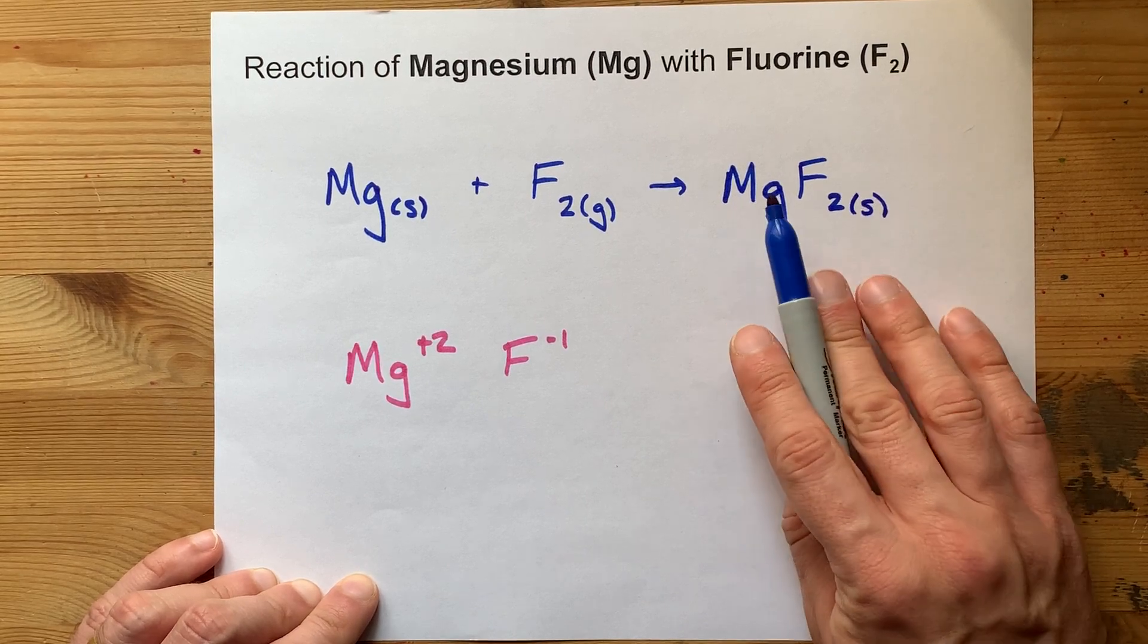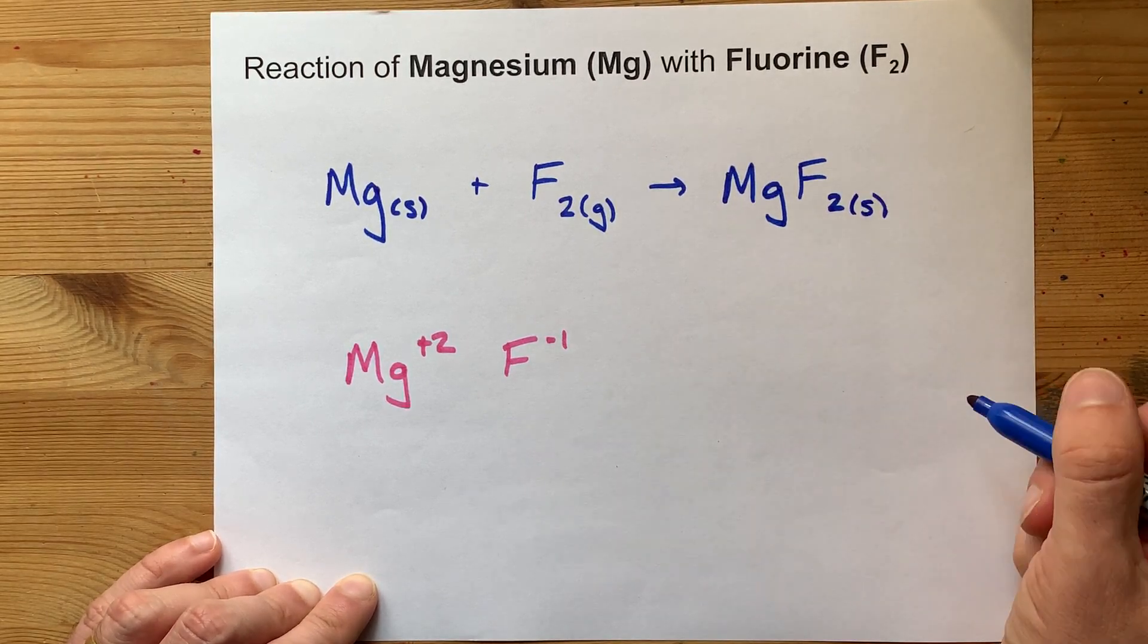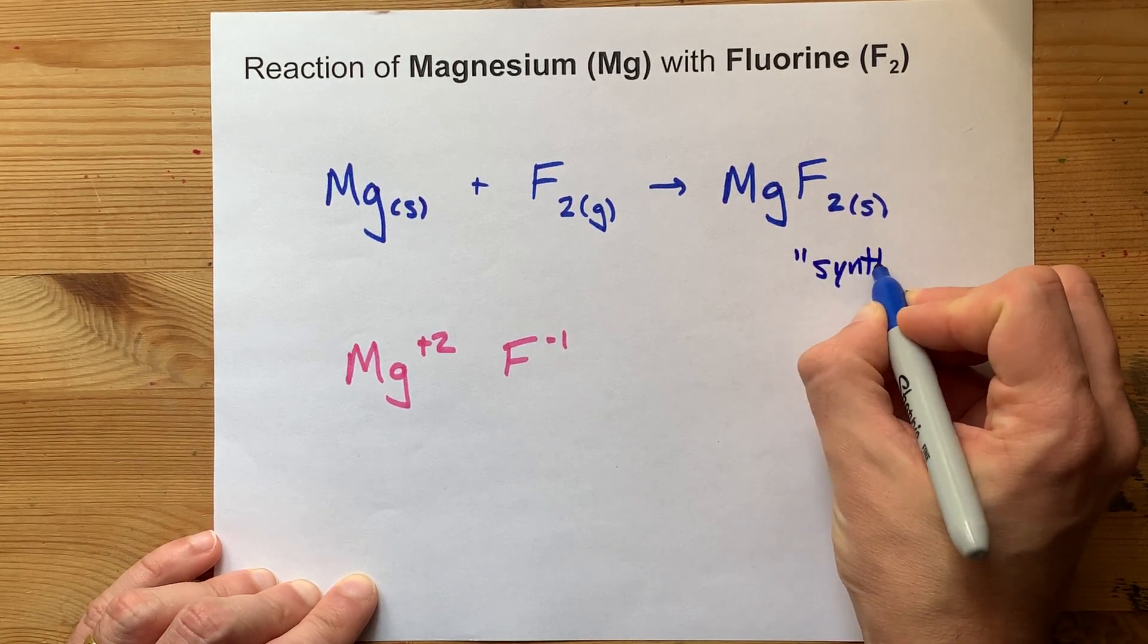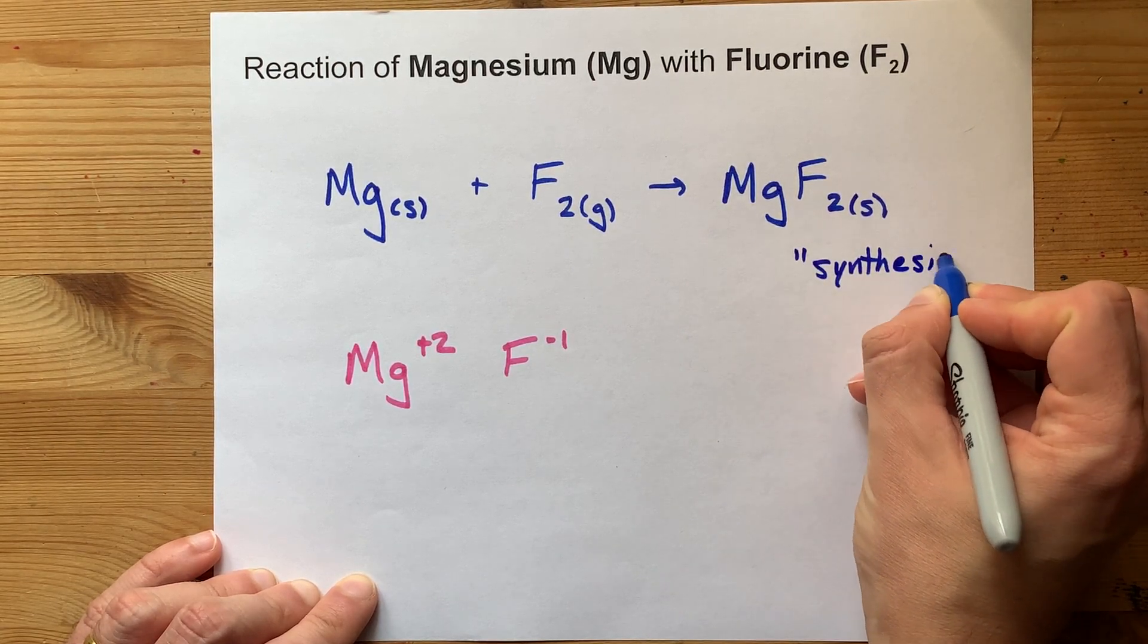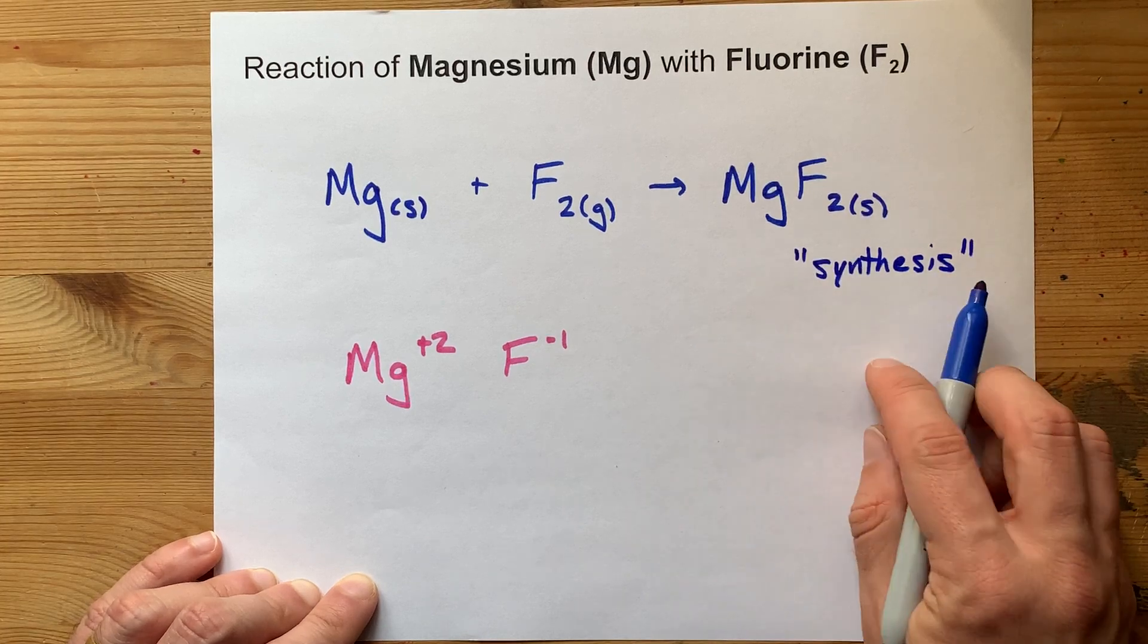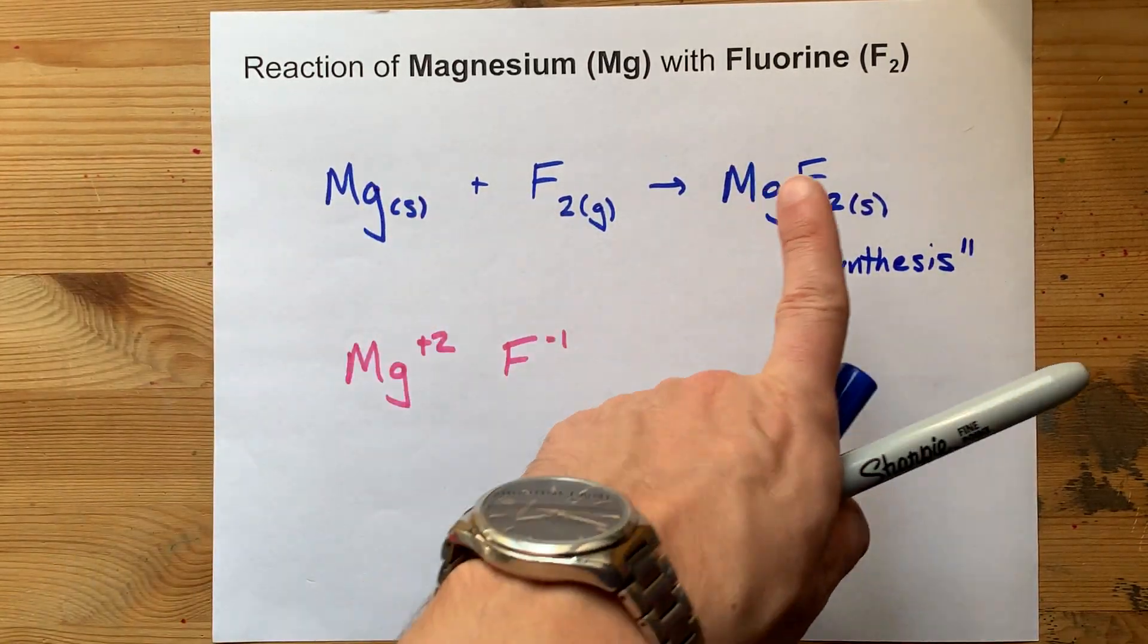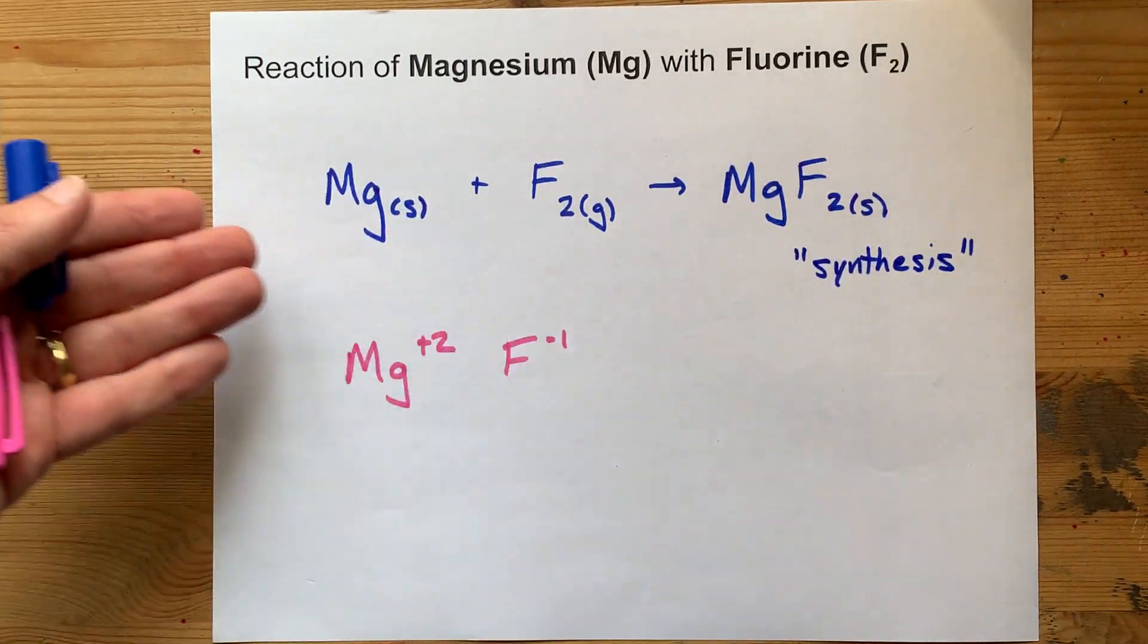And so we end up with a single ionic product, magnesium fluoride. Two elements coming together to form a single compound is called a synthesis reaction. And that's what we have here. Two become one. Best of luck.